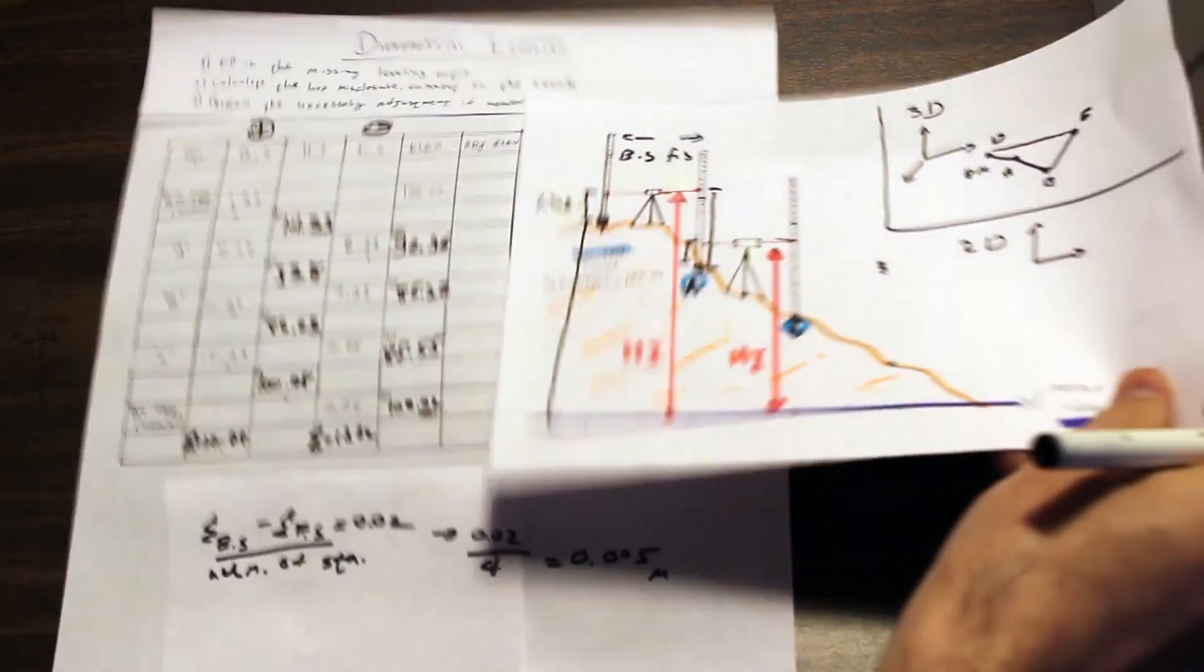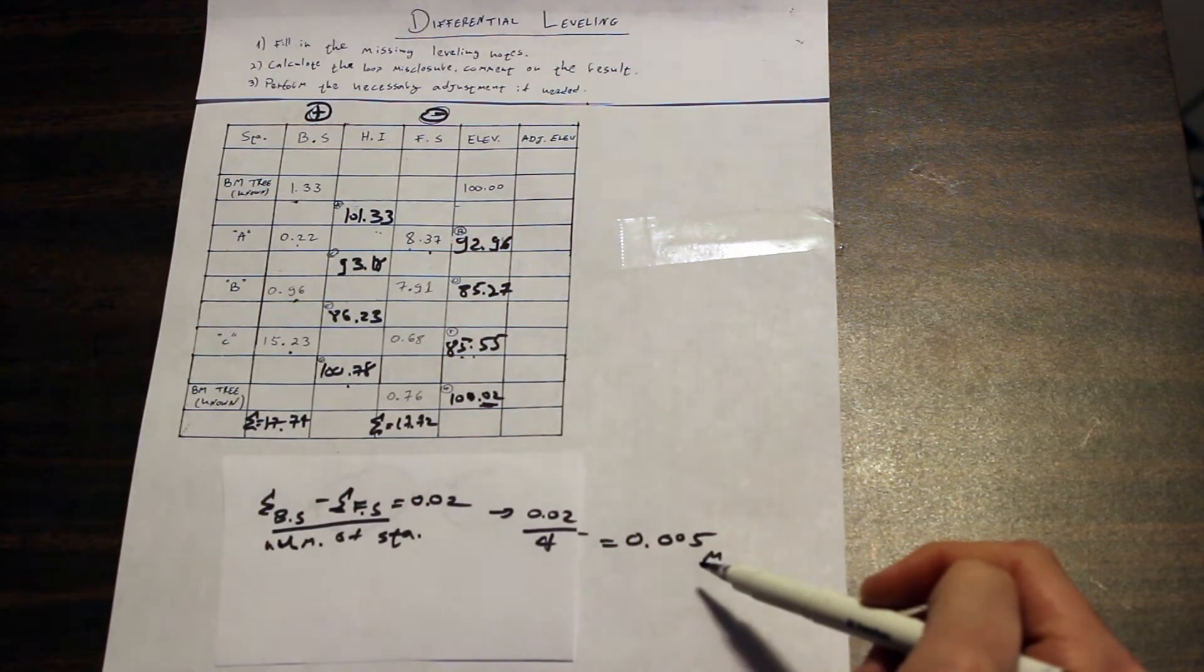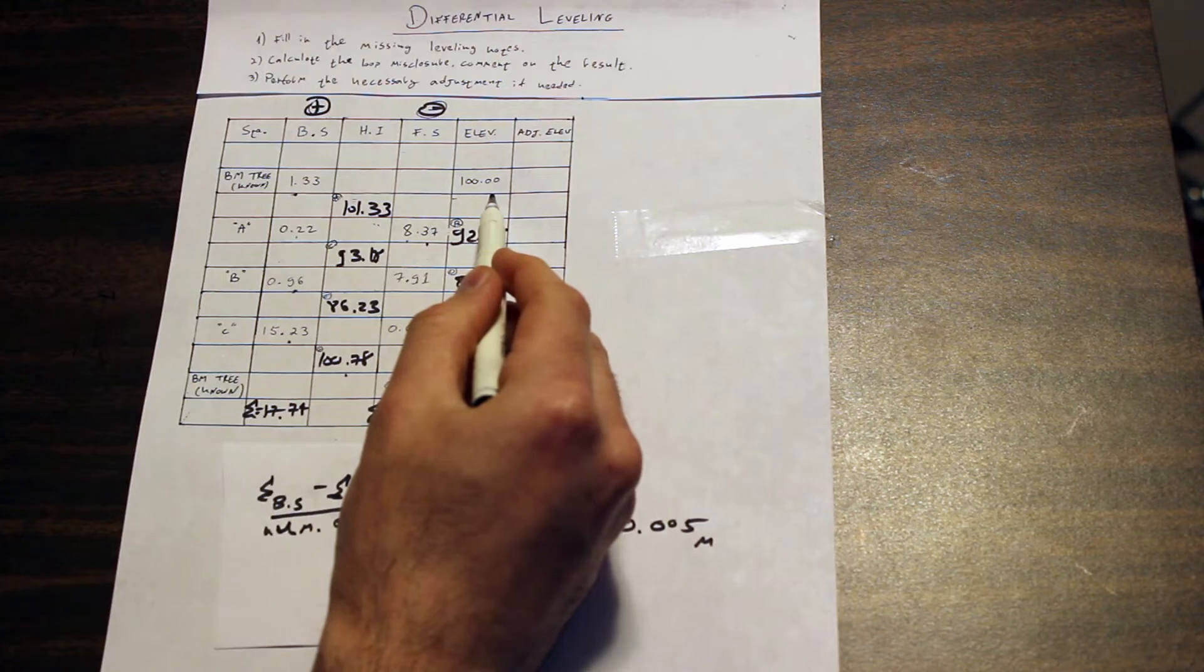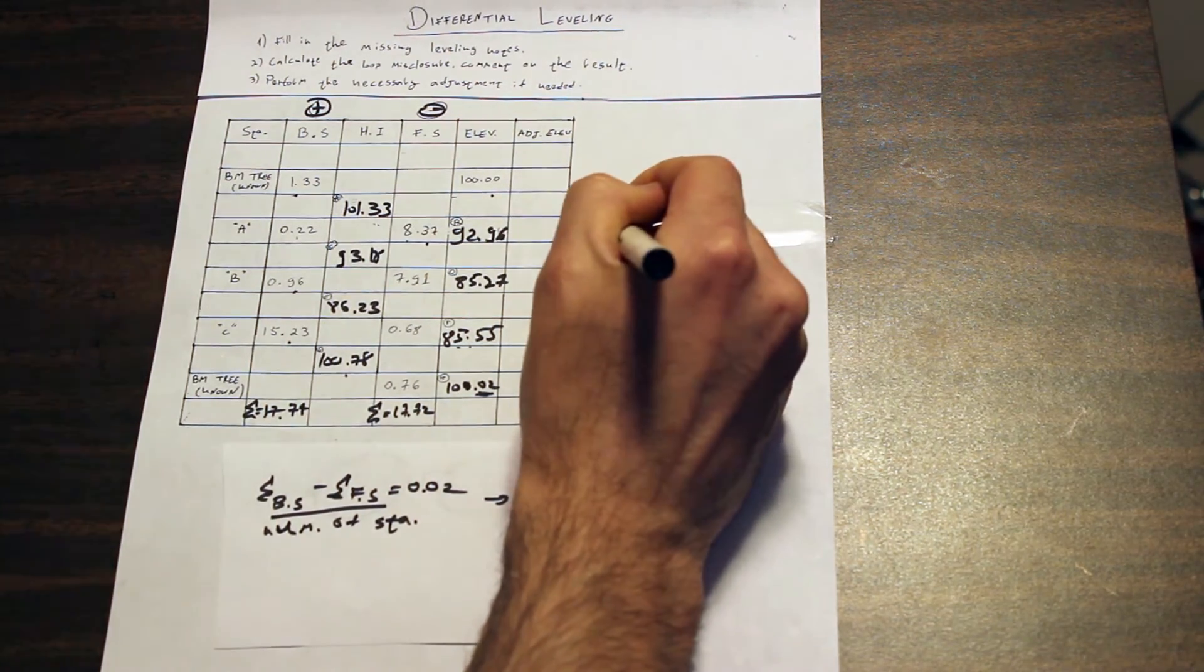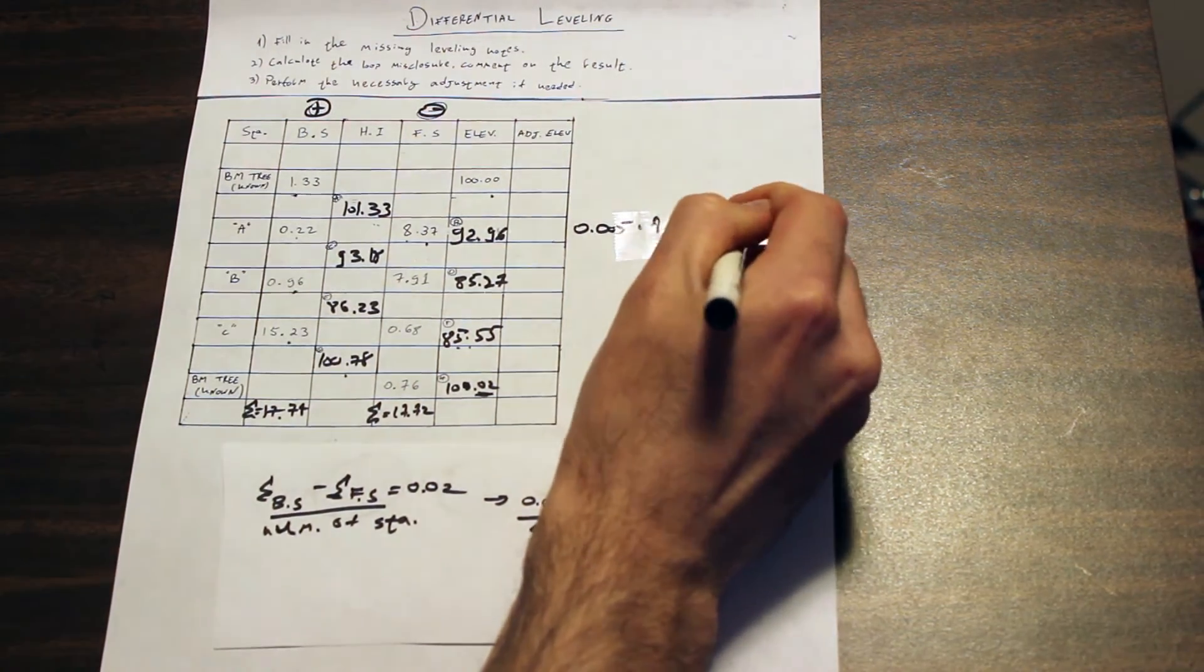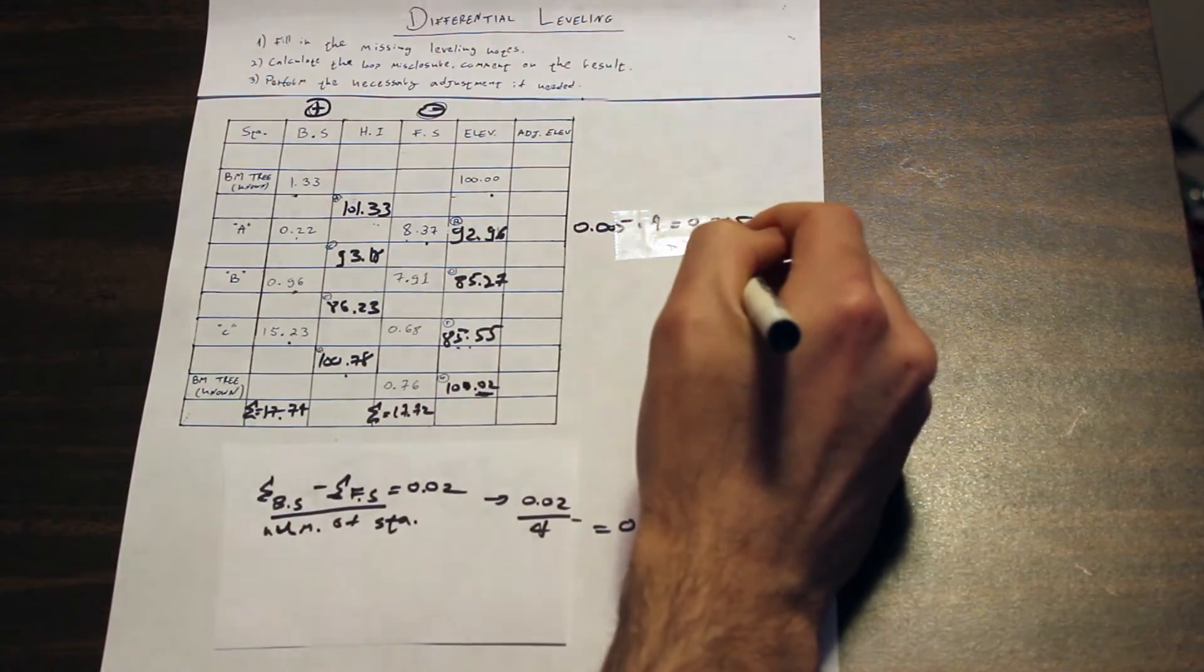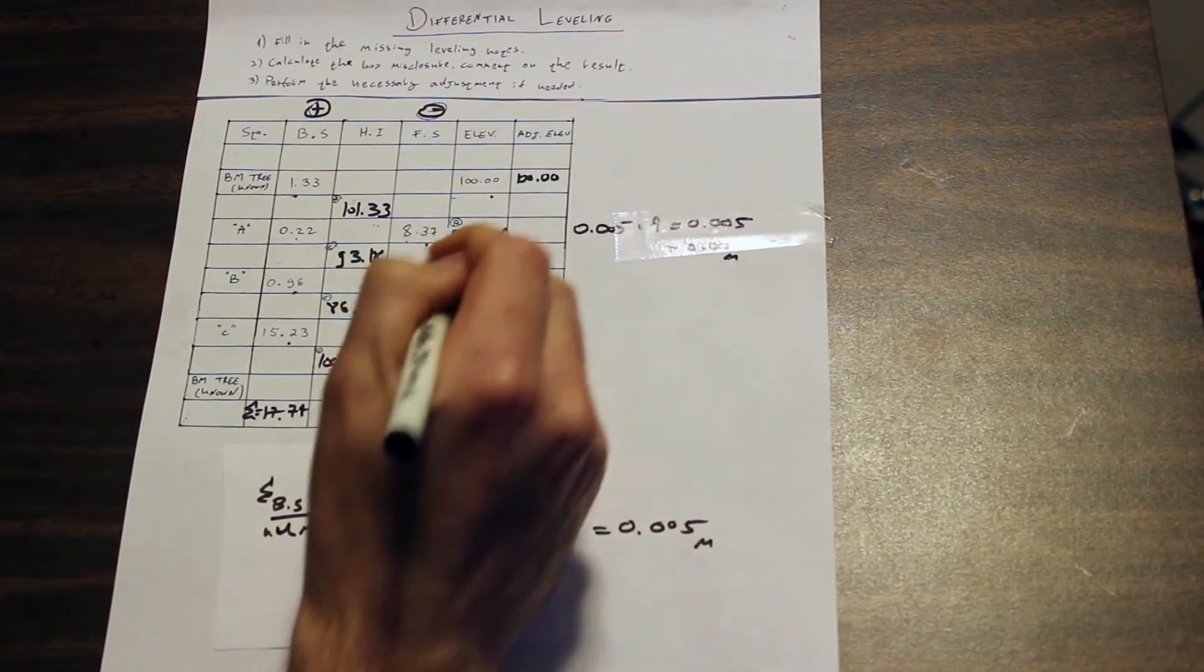Now, how do we perform the adjustment? Let's take off this page so we could do it easily. Very simple: for each station we would basically do the adjustment and multiply by n plus 1. For the first one, there's no need to adjust because this is a known elevation, this is the number that we want to finish with. The second one, station A, we'll do 0.005 times 1, which will basically give us the same number. Rounding up to two significant digits, because that's what the question is asking us, and that's usually the common practice in surveying, two significant digits, we would get the same number. So our first elevation is 100 and our second elevation at A is also 92.96.